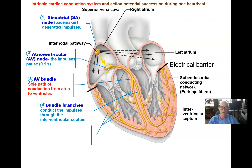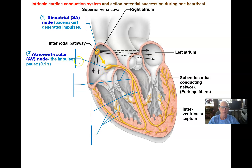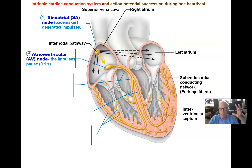The wave of depolarization then reaches the AV node — the atrioventricular node — and spreads from cell to cell through this pacemaker tissue, but it takes a while. It's an intentional delay, like a little timer lasting about a tenth of a second, to give time for blood to move down from the atria into the ventricles. Moving that mass of blood takes time, so that delay gives us the time we need.